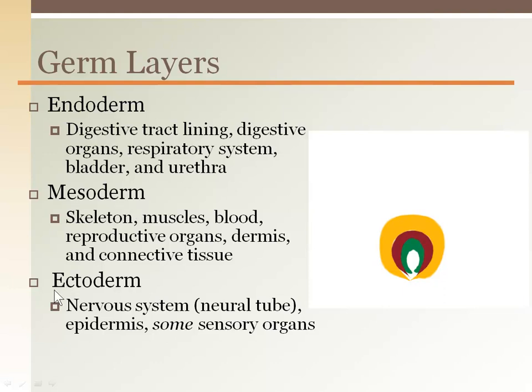The outermost layer is the ectoderm, which is the entire nervous system plus a few other things like epidermis and sensory organs. The top of this tube will become the brain, with the spinal cord and peripheral nerves extending from that.